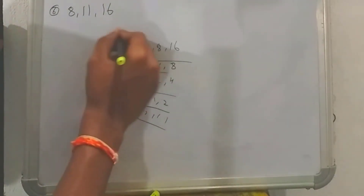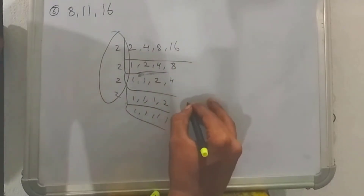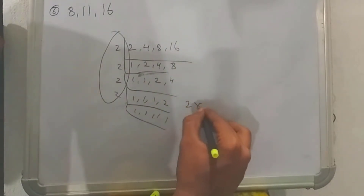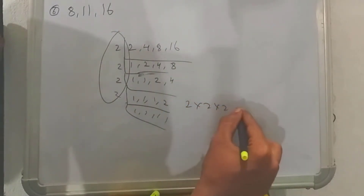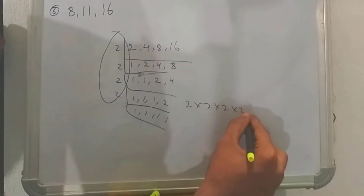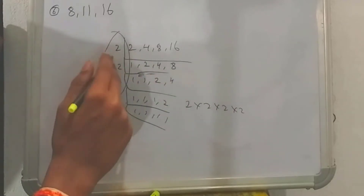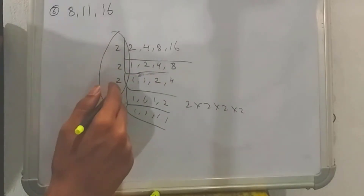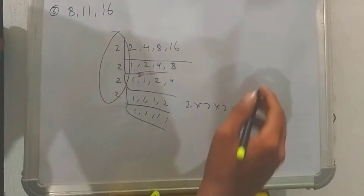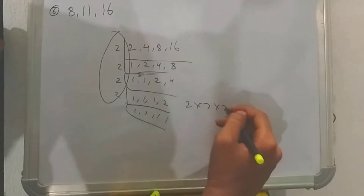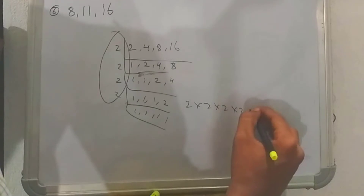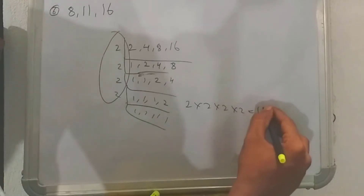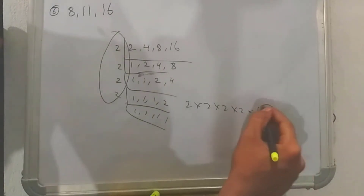Here we have 2 into 2 into 2 into 2. 2 to 4, 4 to 8, 8 to 16. The answer is 16.